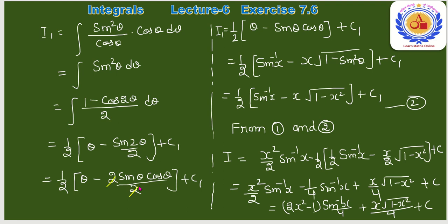Values back substitute: I₁ = (1/2)[sin⁻¹(x) − x·√(1−x²)] + C₁। Equation (1) में put करके simplify: x²/2·sin⁻¹(x) − (1/2)·I₁।